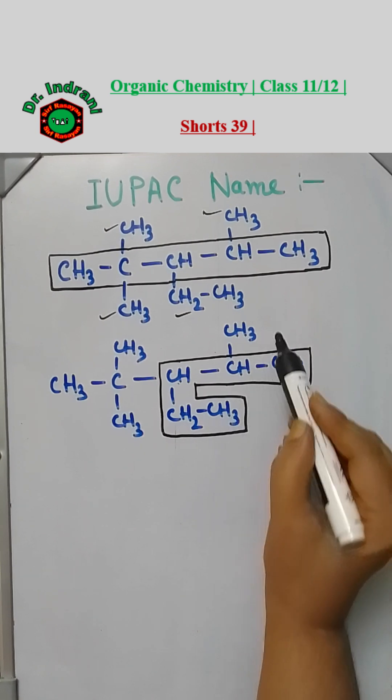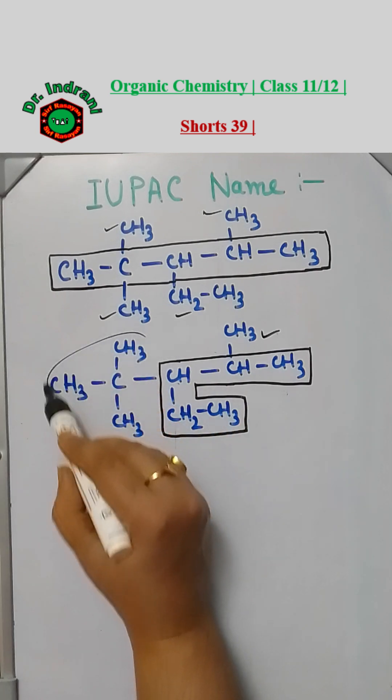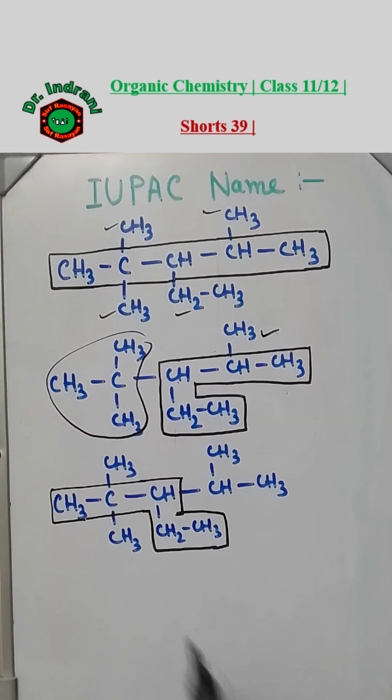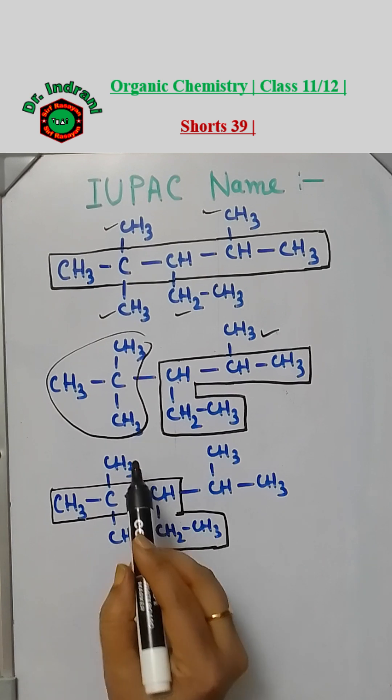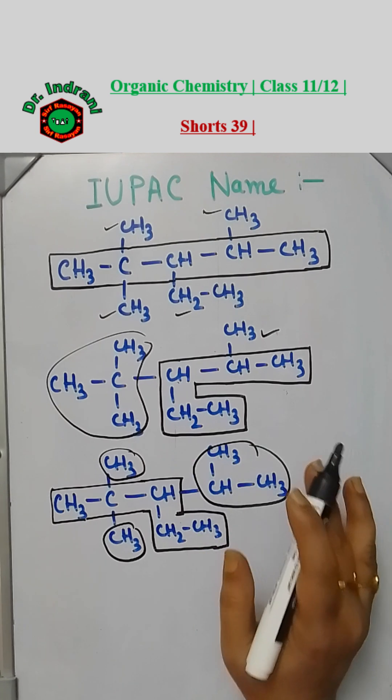If you consider this chain as the parent chain, the number of substituents are two because this is one substituent and this is another substituent. If you consider this chain as the parent chain, the number of substituents are one, two, and three.